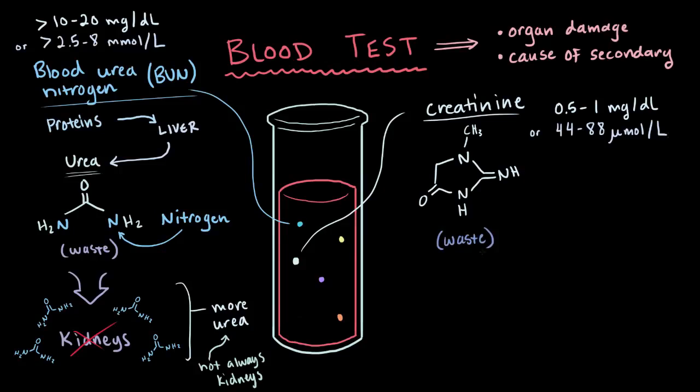Creatinine is also a waste product, and is produced from muscle metabolism, and released into your bloodstream at this constant rate. And then it's removed entirely by your kidneys. And because of this, it's generally a pretty solid estimate of kidney function.